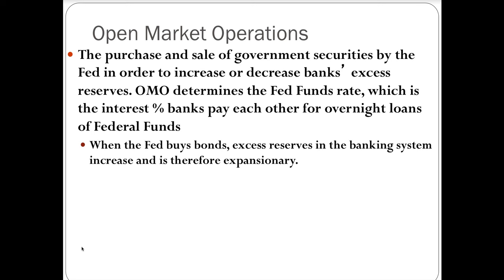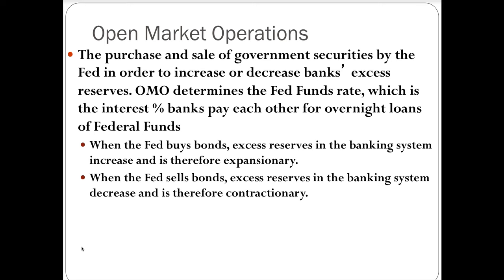When the Federal Reserve buys bonds, excess reserves in the banking system increase, and therefore it's expansionary — this will lower nominal interest rates. When the Federal Reserve sells bonds, excess reserves in the banking system decrease, it's therefore contractionary, and you'll see an increase in interest rates. Another way to think about it: when the Fed buys bonds, that increases the price of the bond, which according to bond theory lowers the yield, and it's that yield that is closely linked to interest rates.